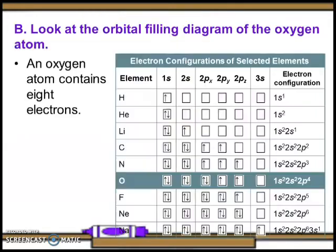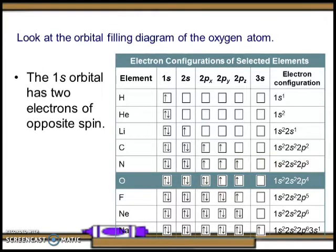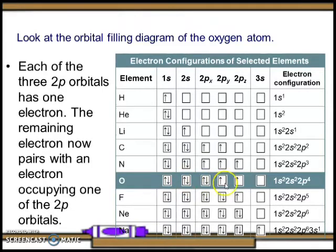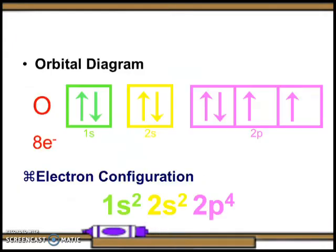Now look at the orbital filling diagram of the oxygen atom. An oxygen atom contains eight electrons. The 1s orbital has two electrons of opposite spin. The 2s orbital also has two electrons of opposite spin. Each of the three 2p orbitals has one electron, and the remaining electron pairs with an electron in one of the 2p orbitals. The orbital diagram of oxygen gives us the electron configuration: 1s² 2s² 2p⁴.